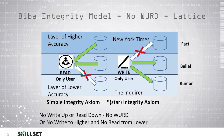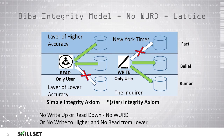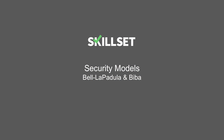Here we have a graphical representation of the BIBA model. Keep in mind with the BIBA model, we are not permitting our users to write up to a higher level than they are authorized, and we're not allowing them to read from a lower level than they're authorized to. On the left, users are permitted to read from their level as well as a higher level, but they're not allowed to access any information at the lower level. When writing, users are permitted to write to their level or write to the level below, but they're not permitted to write any data to the higher level. This concludes our security models module. Thank you for watching.